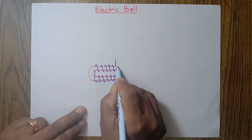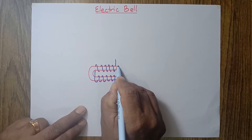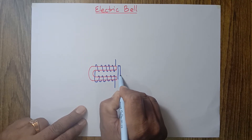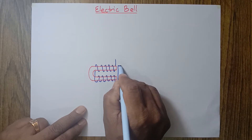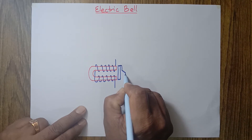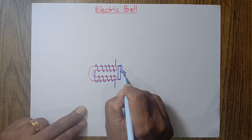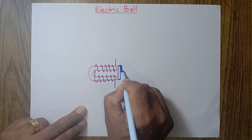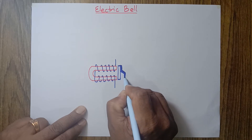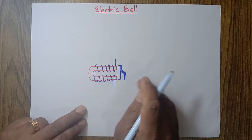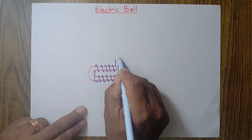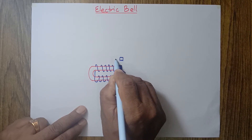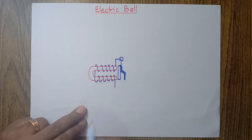Now, very close to this electromagnet, a soft iron bar is placed. This soft iron bar is connected to a spring. A spring is something that when we press it, it displaces from its original position, and when we stop pressing it, it regains its position. This electric wire is connected to this spring.